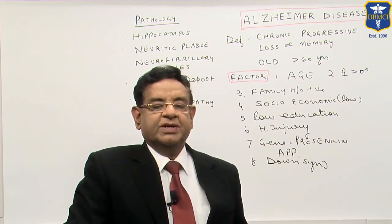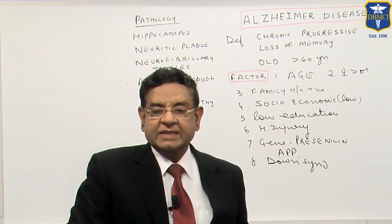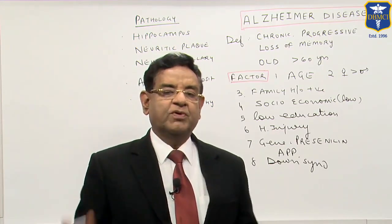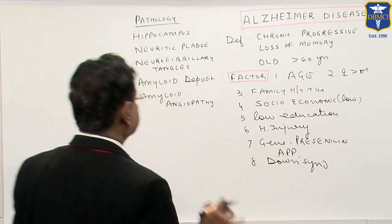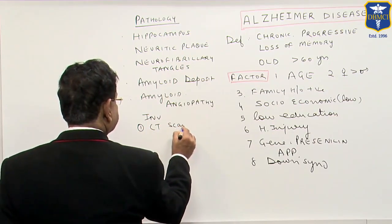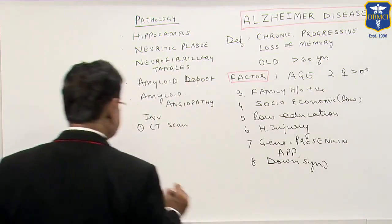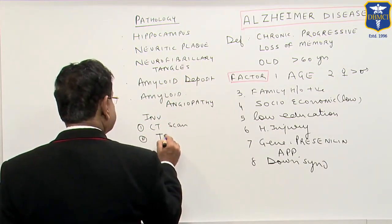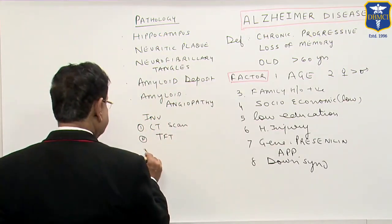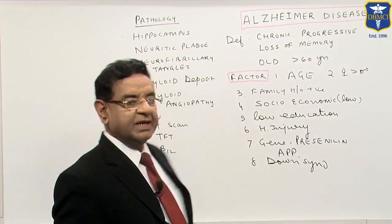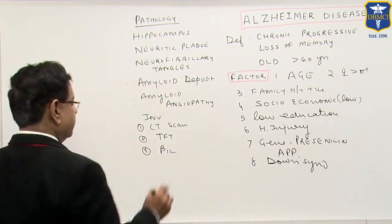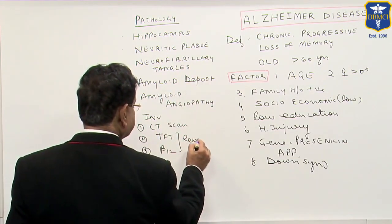There is no definite investigation which can prove that a patient has Alzheimer's disease or dementia. Alzheimer's disease is a diagnosis of exclusion, so we do the following investigations: CT scan to rule out especially chronic subdural hematoma; thyroid function test, because hypothyroidism can manifest with loss of memory; vitamin B12 level, because B12 deficiency can also lead to dementia. These are reversible causes of dementia.